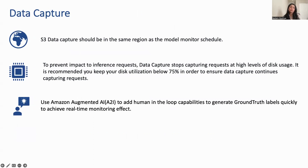For data capture, first ensure the S3 data capture bucket is in the same region as the Model Monitor schedule. Keep an eye on the inference instance disk utilization — it should stay below 75% to prevent impact to inference requests. Data capture stops capturing requests at high disk utilization, so keeping below 75% ensures continuous request capture. For a real-time monitoring effect, generate ground truth labels quickly. You can leverage Amazon Augmented AI (A2I) to add a human-in-the-loop capability to generate ground truth labels, achieving a real-time monitoring effect.